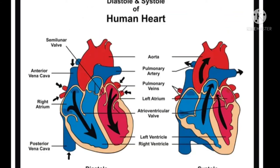Next we are going to pulse. The regular throbbing of the arteries caused by the successive contractions of the heart — that is, blood is pumped into the blood vessels at regular intervals — is called pulse. The rate of the pulse will be equal to the number of heartbeats.